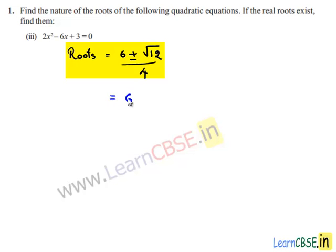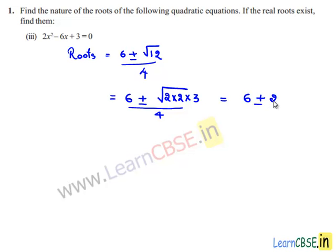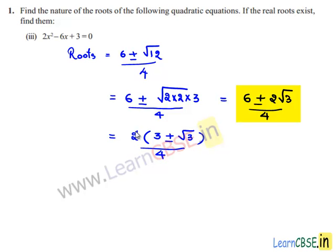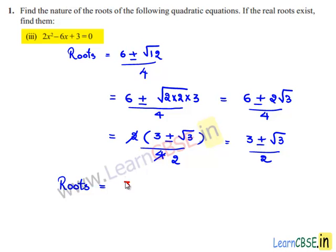This can be written as (6 ± √(4 × 3)) / 4 = (6 ± 2√3) / 4. Taking 2 as common from the numerator gives 2(3 ± √3) / 4. So 2 goes into 4 twice, giving the roots as (3 ± √3) / 2. Therefore the required roots are (3 + √3)/2 and (3 - √3)/2.